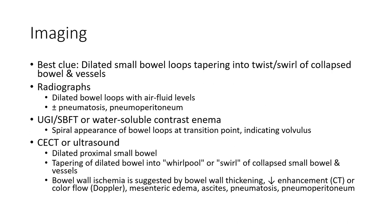Ultrasound findings: dilated small bowel loop tapering into the twist, with swirls of collapsed bowel and vessels. Radiograph findings: dilated bowel with air-fluid levels, plus or minus pneumatosis or free peritoneal air.